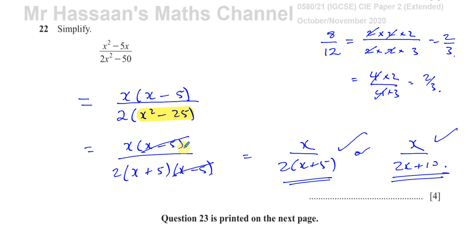When you're factorizing the denominator, be careful here, we have a difference of squares. So that factorizes further to x plus 5, x minus 5 and that's probably where some students might have got stuck on this question.